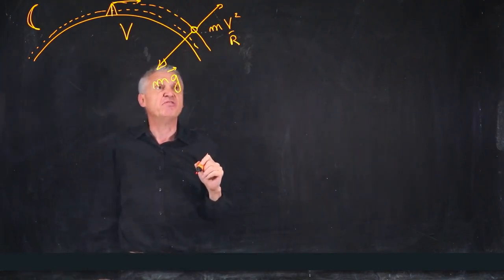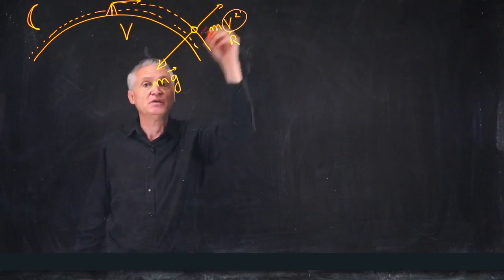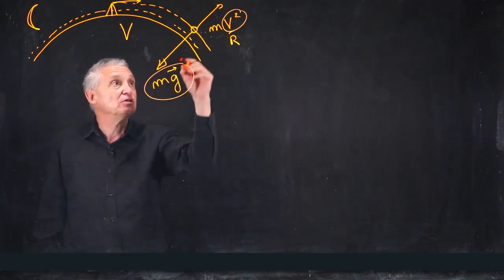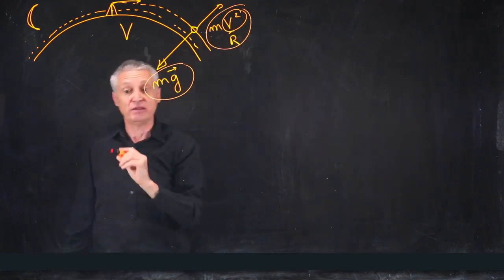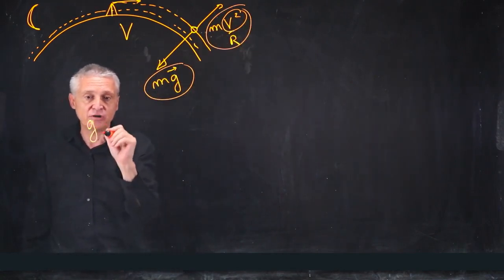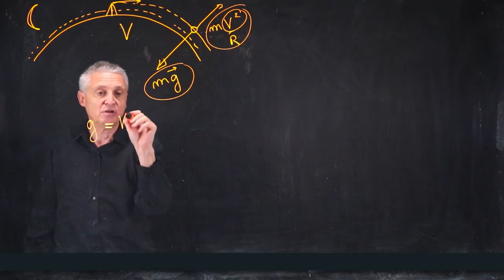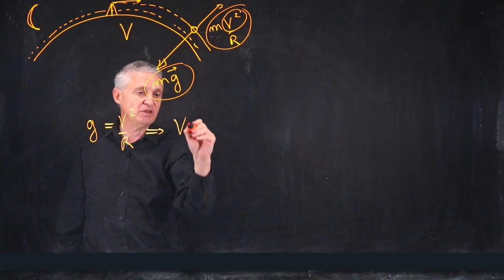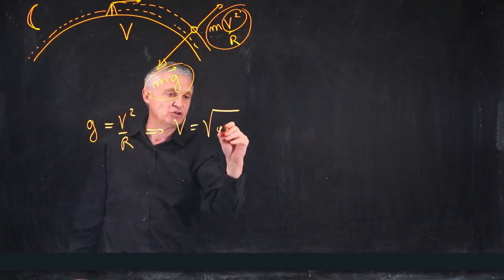And to compute the value of the velocity, it's very simple. We have to express that these two forces are equal. And the equation is very simple. g is simply V² over R, which gives V is square root of gR.